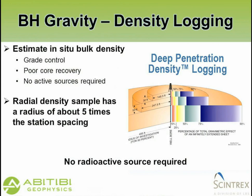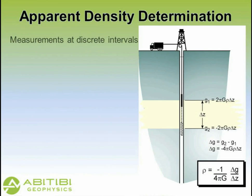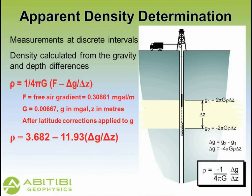The density calculations are fairly straightforward. You take readings at two intervals. The important thing is that the volume of material going into that density calculation is roughly five times the station interval between successive readings in the borehole. Importantly, no radioactive sources are required to collect density — it is a calculation from the gravity measurements. It's obtained by doing discrete gravity readings, taking the distance between them and the difference between them corrected, using a fairly straightforward formula with no calibration required.